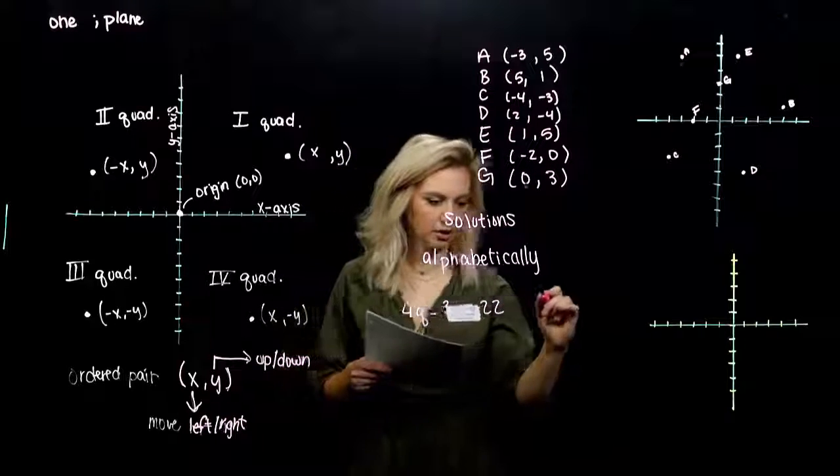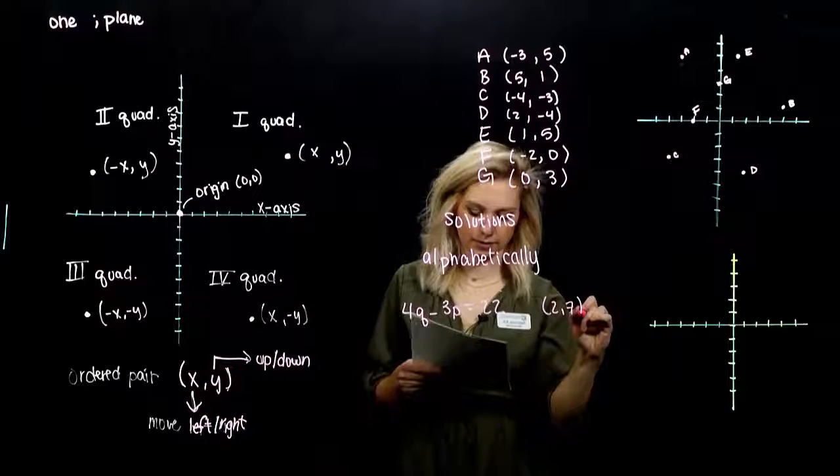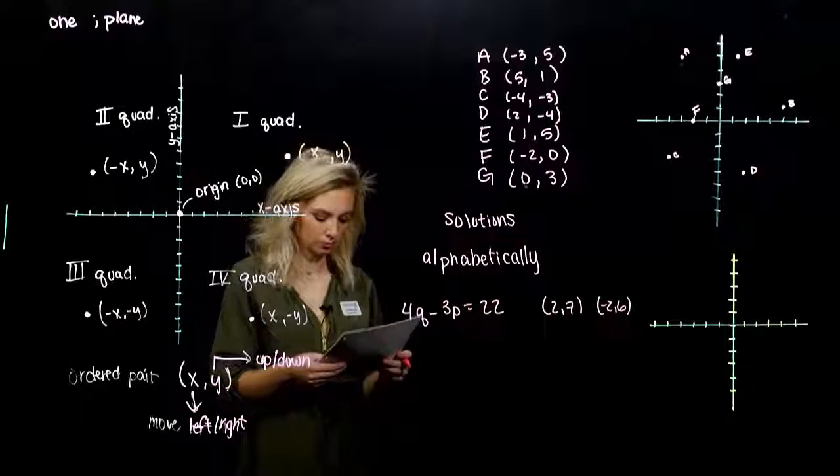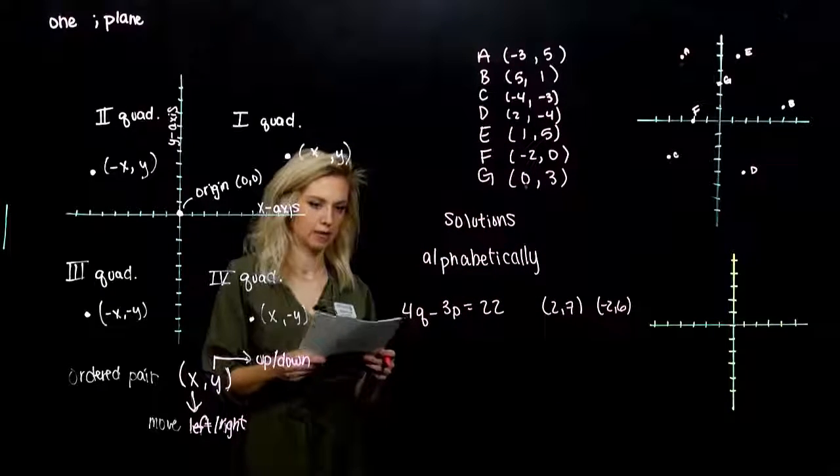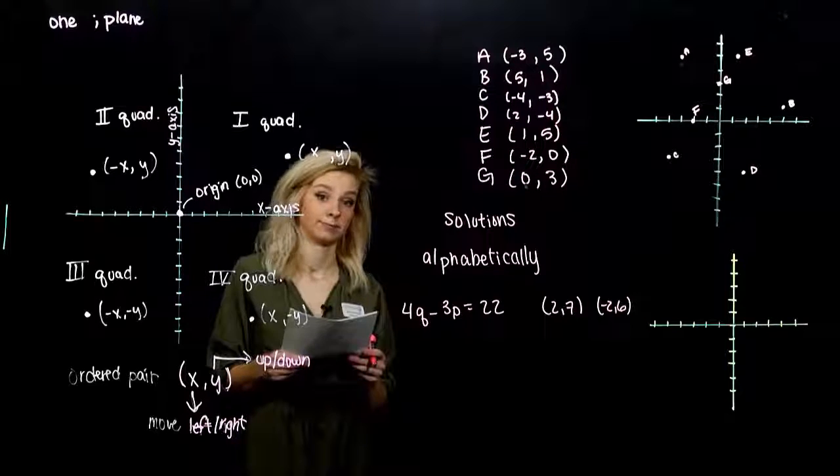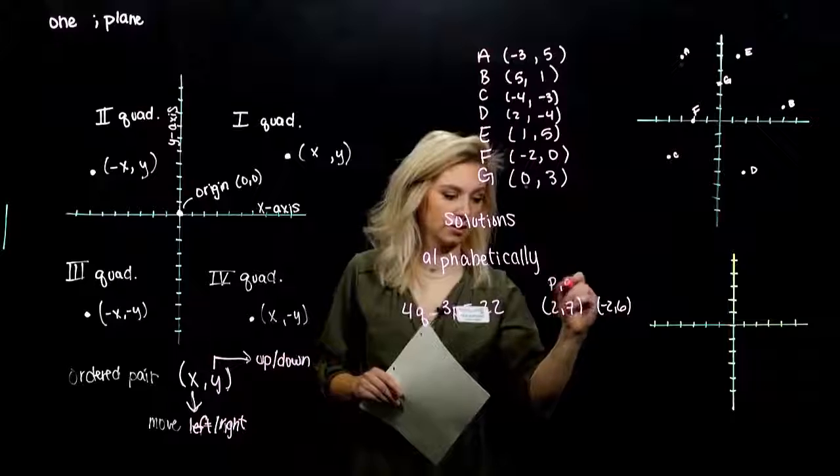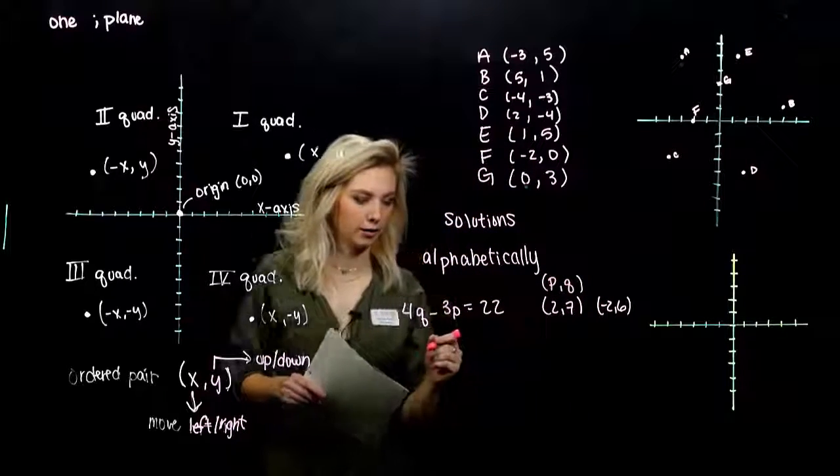Determine whether each of the following pairs is a solution of 4q minus 3p equals 22. We want to check, is 2, 7 a solution, and minus 2, 6. What comes first in the alphabet? P. So pq is our ordering for the pair.